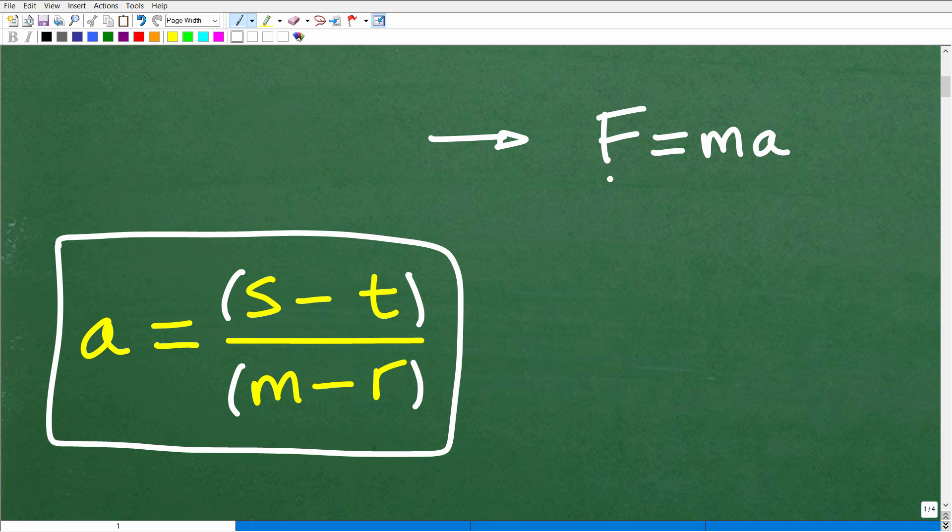But currently, this formula is written in terms of F. In other words, we have F is equal to or we have solved for F. It's written in terms of force. Now, let's suppose I wanted to write this in terms of A acceleration. So we're like, well, let's just rearrange this formula so that we have A is equal to whatever.